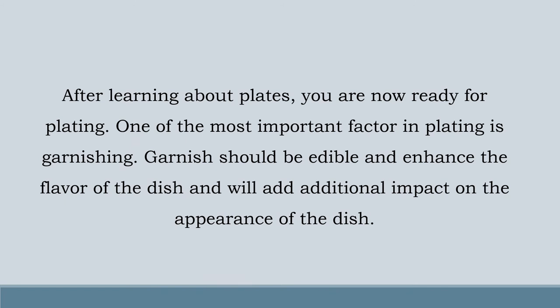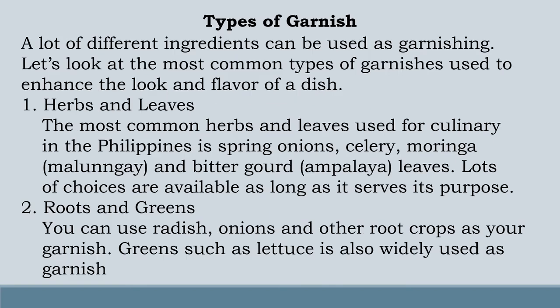After learning about plates, you are now ready for plating. One of the most important factors in plating is garnishing. Garnishing should be edible and enhance the flavor of the dish and will add additional impact on the appearance of the dish. Types of garnish: a lot of different ingredients can be used as garnishing. Let's look at the most common types of garnishes used to enhance the look and flavor of a dish. Number 1: Herbs and leaves — the most common herbs and leaves used for culinary in the Philippines are spring onions, celery, moringa or malunggay, and bitter gourd. Lots of choices are available as long as it serves its purpose.